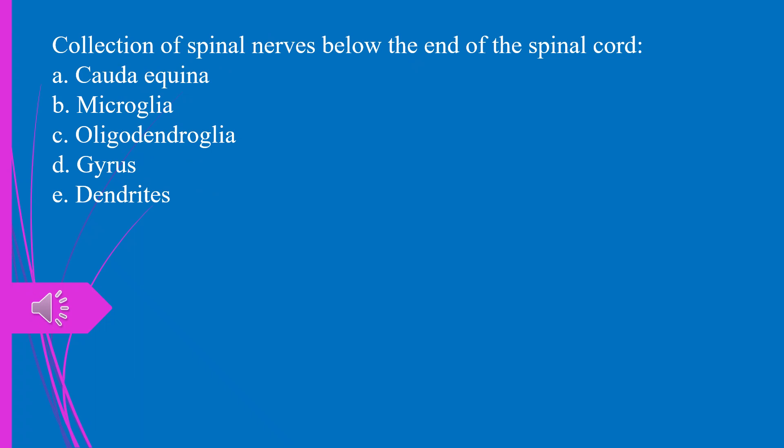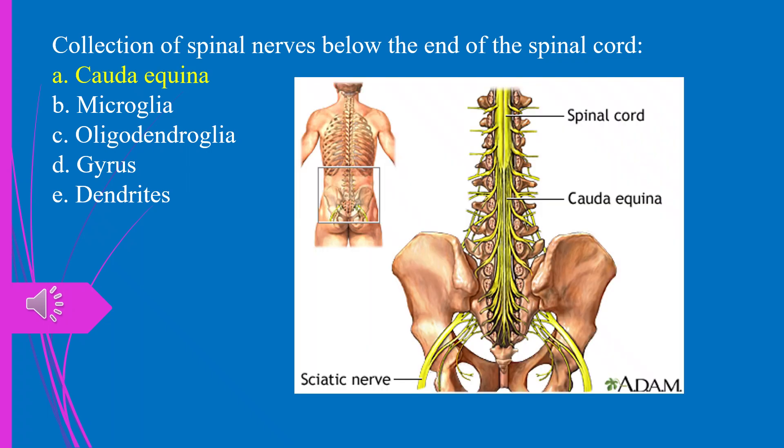Collection of spinal nerves below the end of the spinal cord, A. Cauda equina. B. Microglia. C. Oligodendroglia. D. Gyrus. E. Dendrites. The answer is A. Cauda equina.